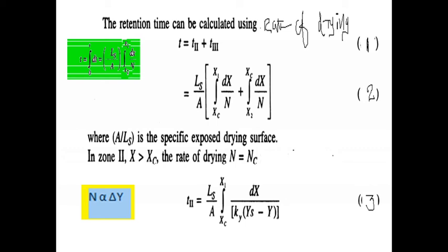Retention time can be calculated using the rate of drying expression. Refer the green color box — this equation is taken from the rate of drying concept covered in a previous video. The retention time T equals the integration from 0 to T: Ls divided by A, integrated from X2 to X1 of dx divided by capital N. The total retention time T equals T2 plus T3, which is equation 1. Comparing with the rate of drying expression, T equals Ls over A times [integral from Xc to X1 of dx over N (zone 2) plus integral from X2 to Xc of dx over N (zone 3)]. This is equation 2, where A over Ls is the specific exposed drying surface.